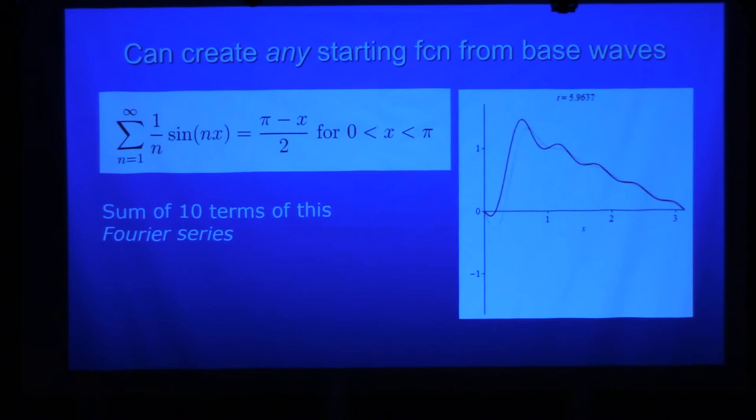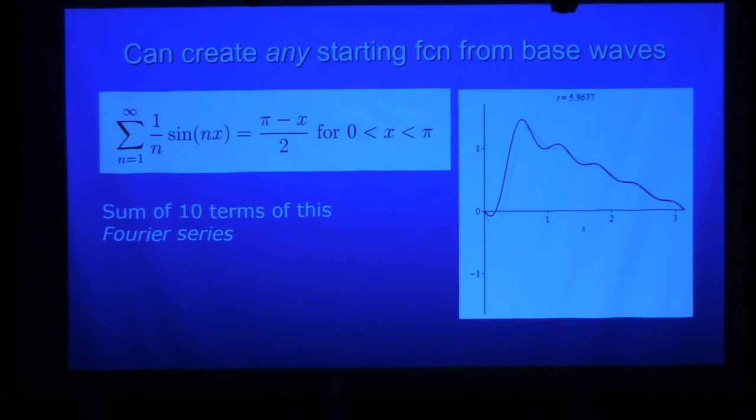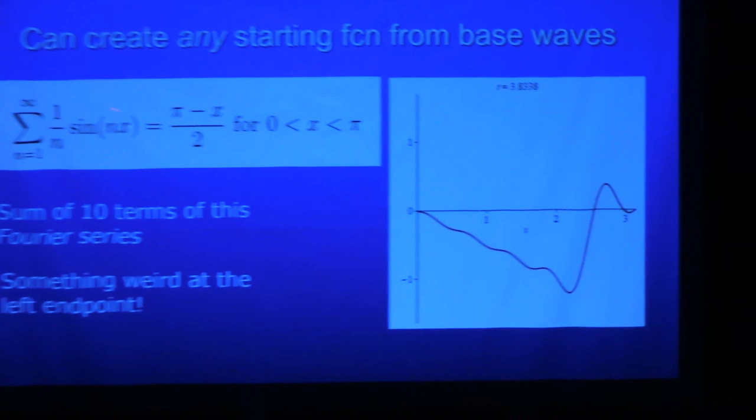And that, oh, when I take 10 terms of this Fourier series, it makes a pattern like this. And right there, it's trying to make that linear function sloping down. Right there, it's trying to make that slope-down linear function. There's something weird at the left-hand endpoint. Think about the slopes of these at zero. The slope of this, each one of these building blocks is one at zero, so you're adding up a lot of very high slopes there.